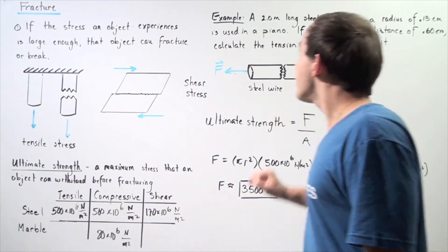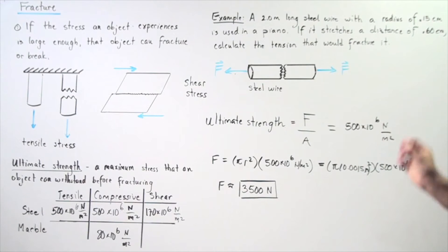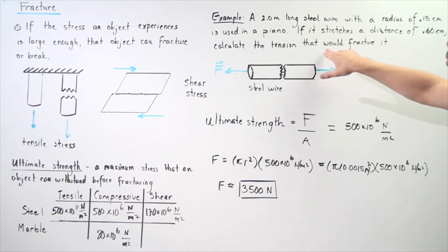So let's look at the following example. Let's suppose a two-meter-long steel wire with a radius of 0.1 centimeters is used in a piano. Now, if it stretches a distance of 0.6 centimeters, we want to calculate the tension that would fracture our steel wire.